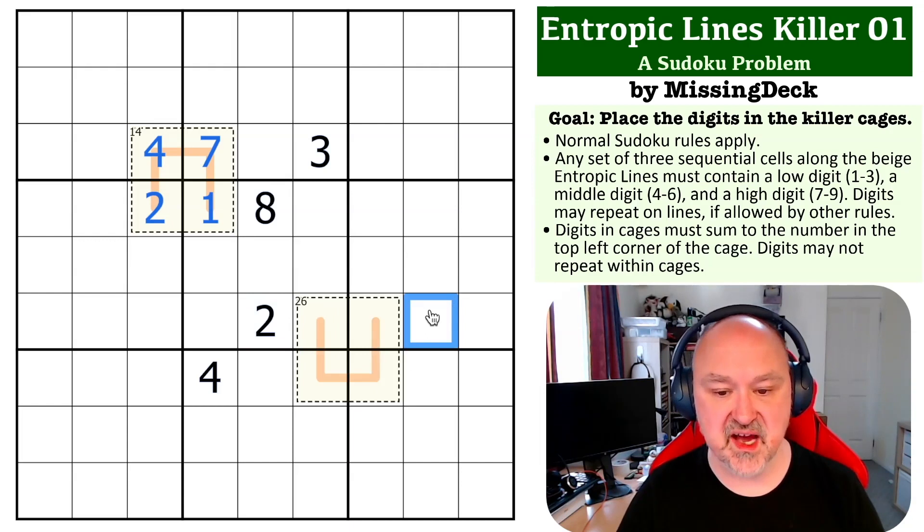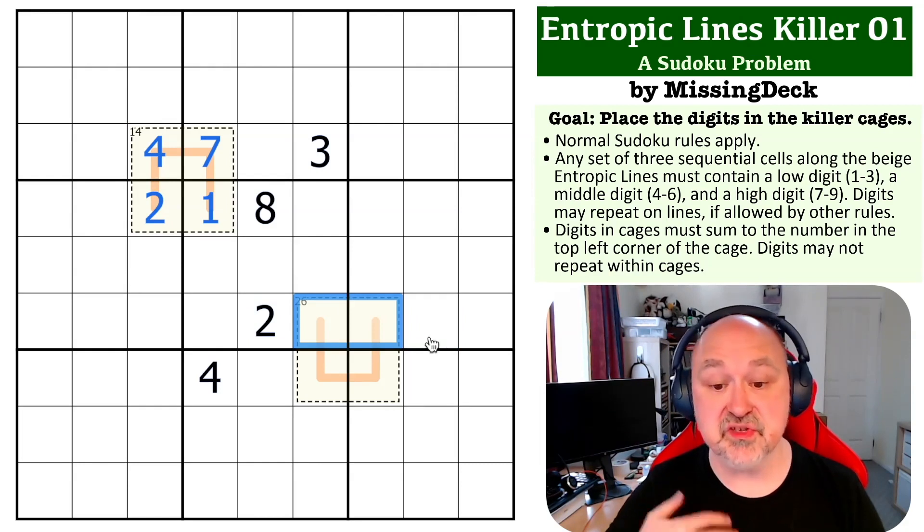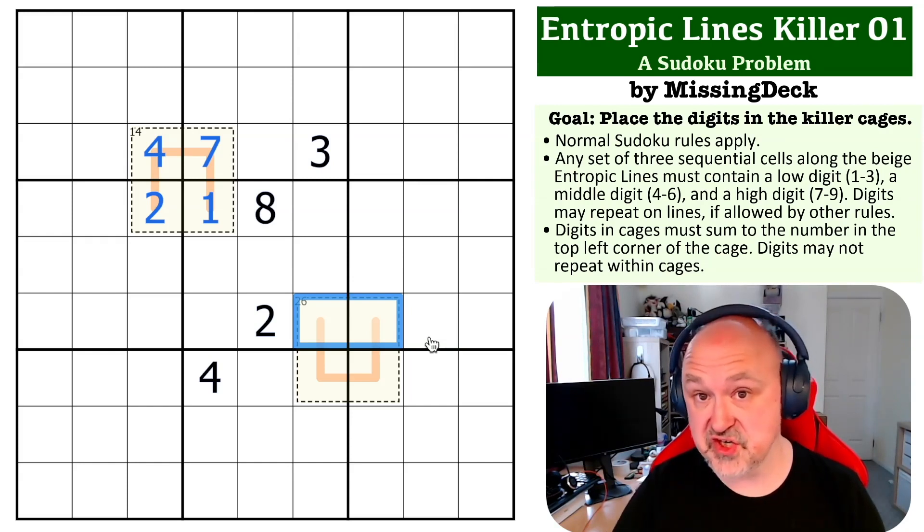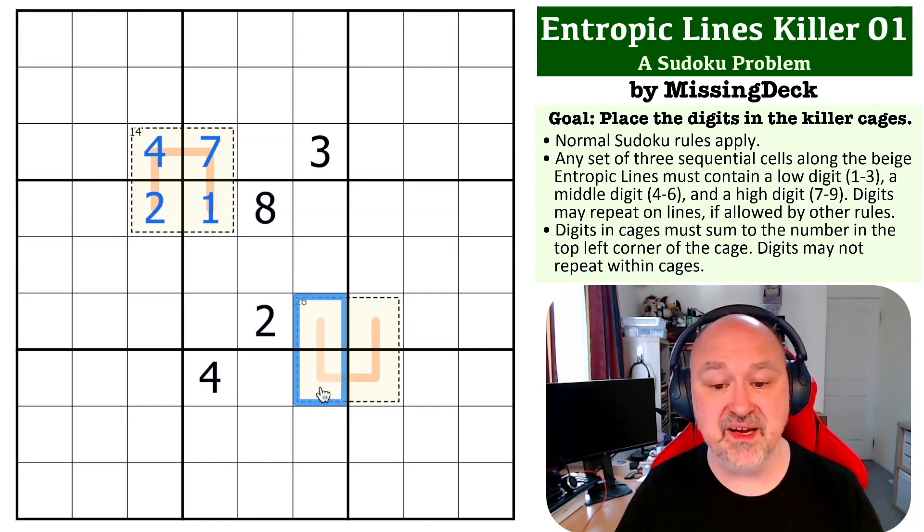Now we can use the 26 cage. Well, if I double up even a medium digit and use the highest possible, because this is a high number, and use six and five, I've got to 11. Once I include the highest low digit I can, which is a three, I've got to 14. And then the remaining digit would need to be a 12, which doesn't work. So I must include two high digits.